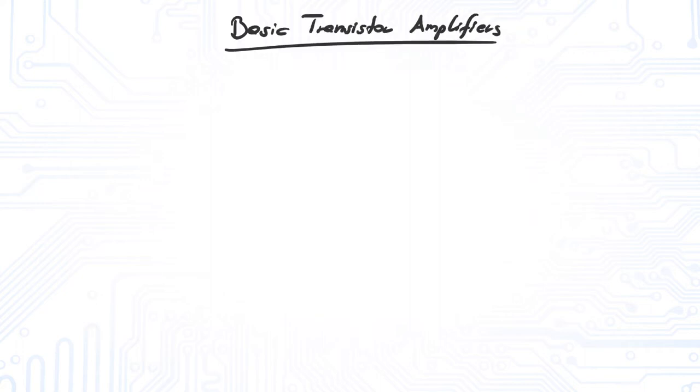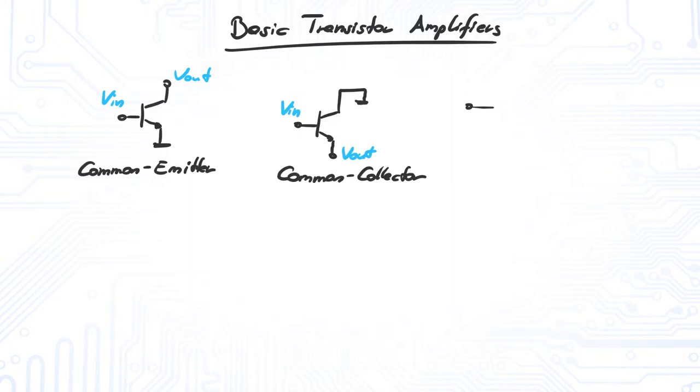For a bipolar transistor, there are three different amplifier configurations: common emitter, common collector, and common base.